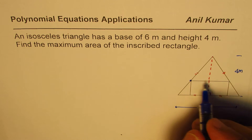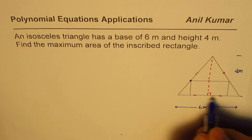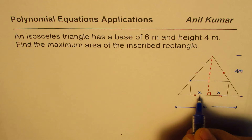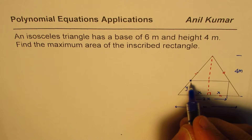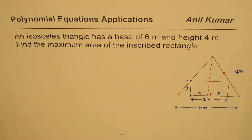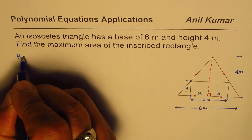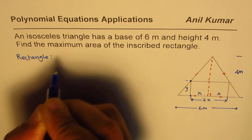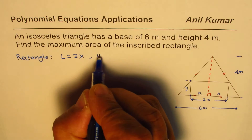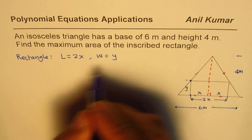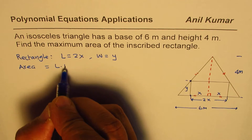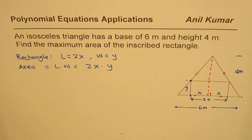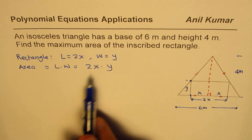Let the dimensions of this rectangle be: length = 2x, so x on this side and x on the other side, and let the width be y. So what we have considered is that the rectangle has length equals 2x and width equals y. In that case, area = length × width = 2x times y.